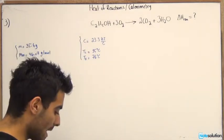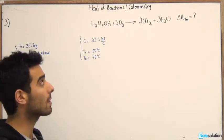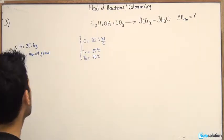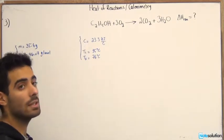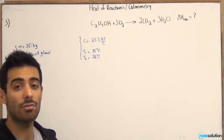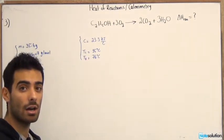So in this example over here, we're asked to find the delta H reaction of the combustion reaction of ethanol. We're given the mass and the molar mass of ethanol, as well as the heat capacity of calorimeter and the temperature initial and final of the system.